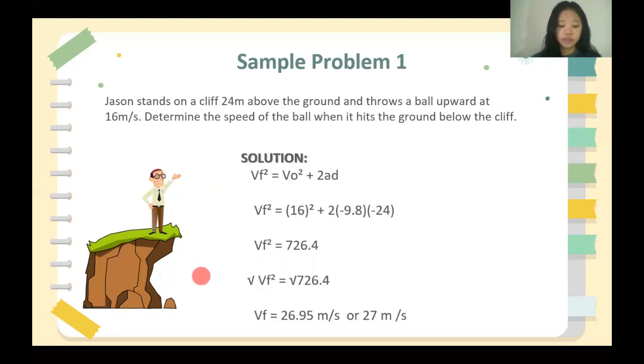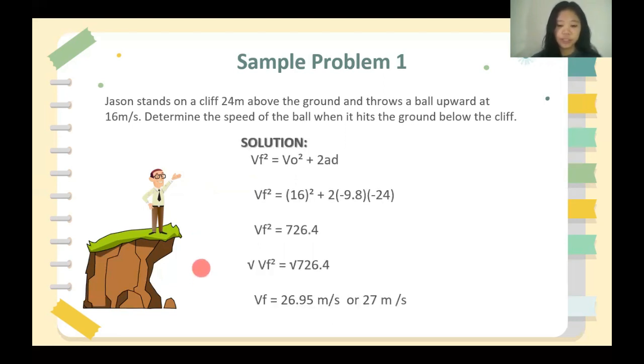As for our solution, substitute the given values to our equation. For the initial velocity we have 16, the gravitational acceleration negative 9.8, and the distance negative 24. Calculate and we will get 726.4. To cancel out the squared we will put square root on both sides and we will get 26.95 meters per second. We round it up and we will get 27 meters per second as the speed of the ball when it hits the ground below the cliff.